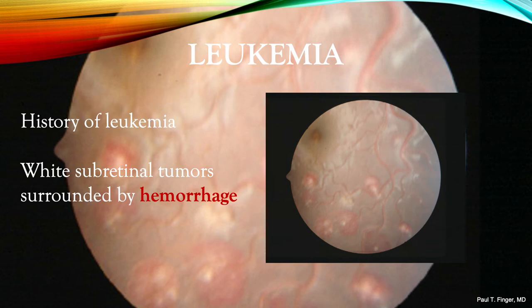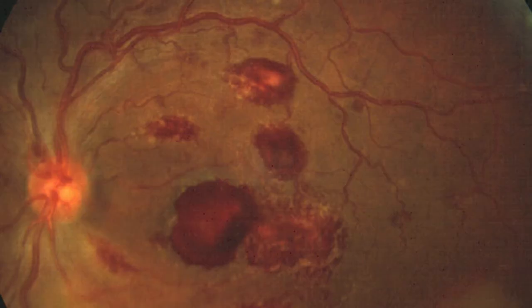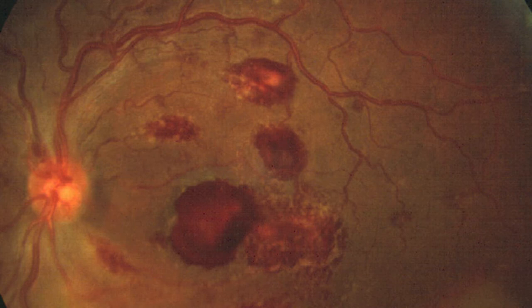Here we see another example of leukemic retinal infiltrates. Like intraocular lymphoma, white blood cells are exquisitely sensitive to radiation therapy. However, unlike intraocular lymphoma, these patients are typically younger at a mean of 26 years of age, where radiation therapy itself may be oncogenic. Multi-specialty assessments and shared decision making are needed for these cases.